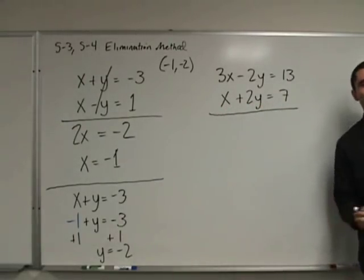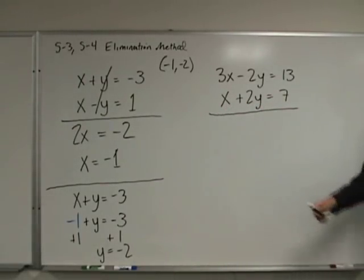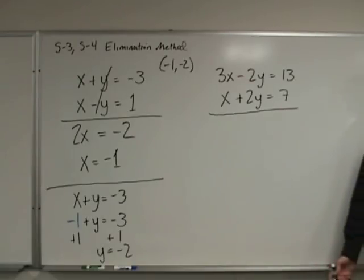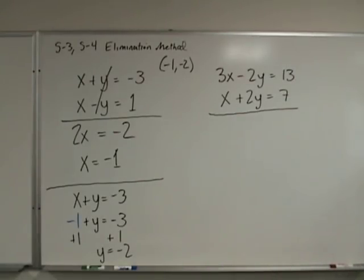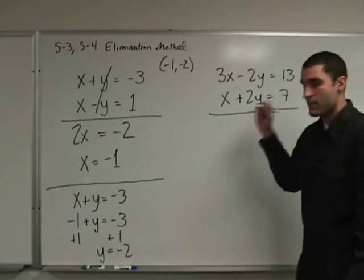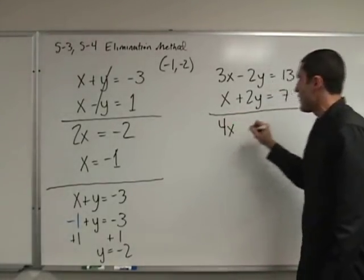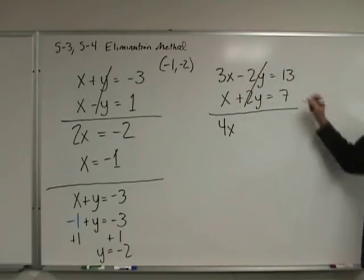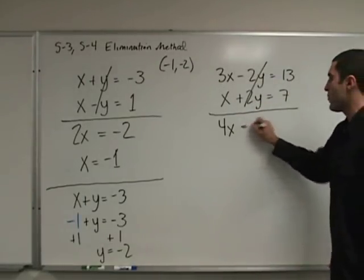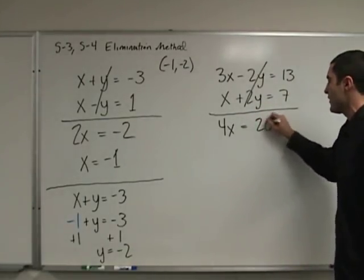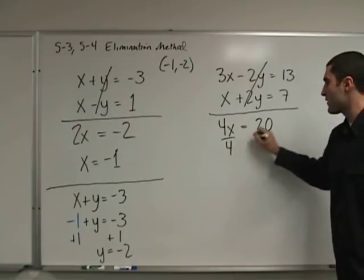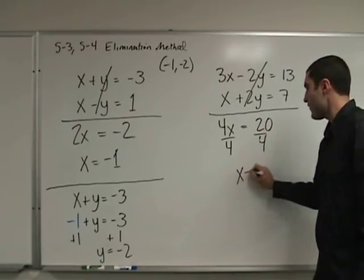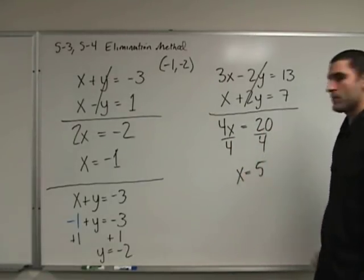Let's add down on the next problem. Three x plus x is 4x. What happens to the y terms? They cancel — gone. 13 plus 7 is 20. Divide by 4: x equals 5.